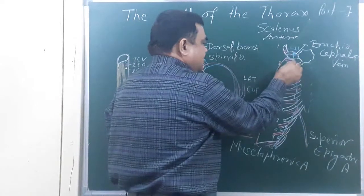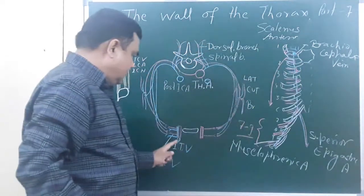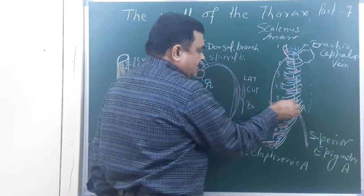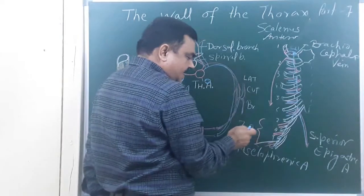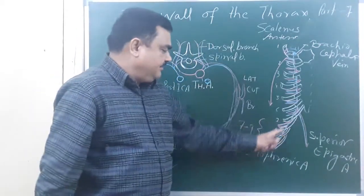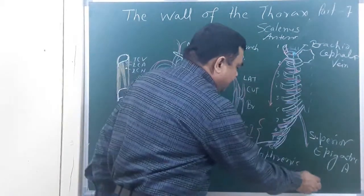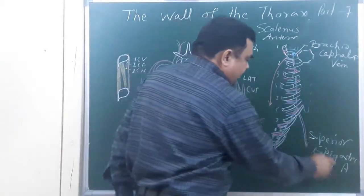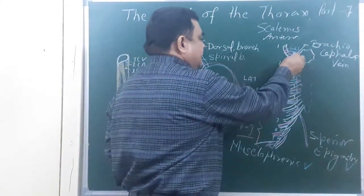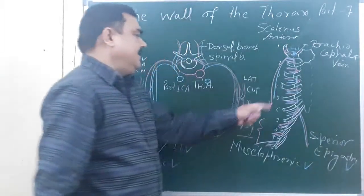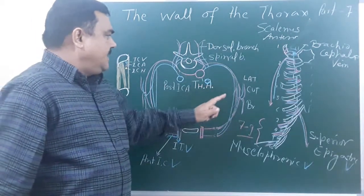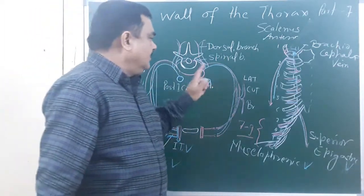Tributaries: in each intercostal space, like the artery branches, there are two anterior intercostal veins. In the upper six spaces, these drain into the internal thoracic vein. From the 7th to 9th space, the two anterior intercostal veins drain into the musculophrenic vein. Here is the superior epigastric vein, and here is the pericardiophrenic vein which accompanies the artery.